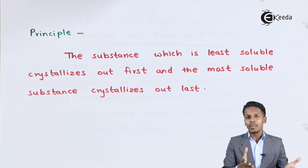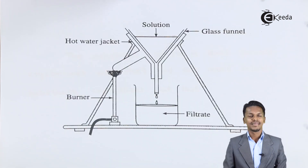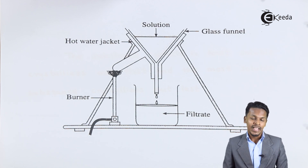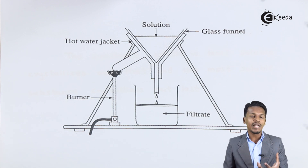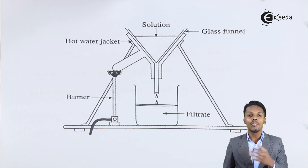Referring to the diagram, suppose we consider a mixture of glucose and fructose dissolved in ethanol. Glucose is not very soluble in ethanol, so we need to provide high temperature. At high temperature, both glucose and fructose will be soluble in ethanol.